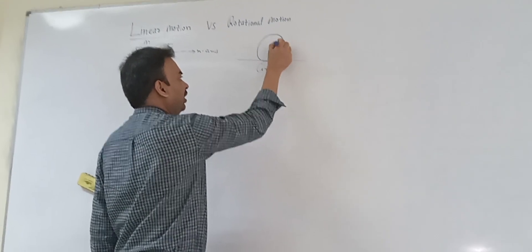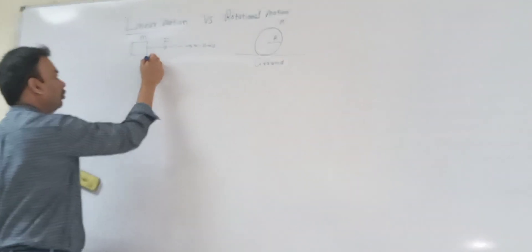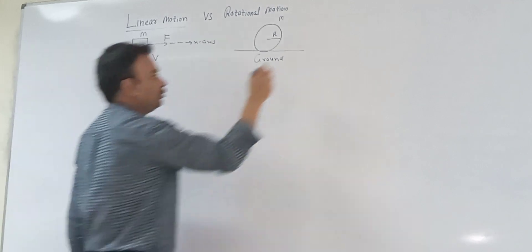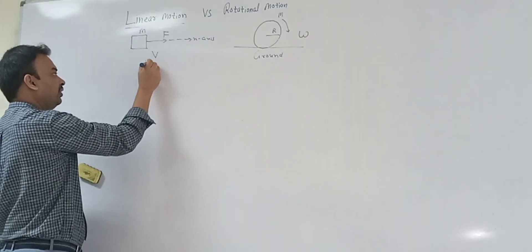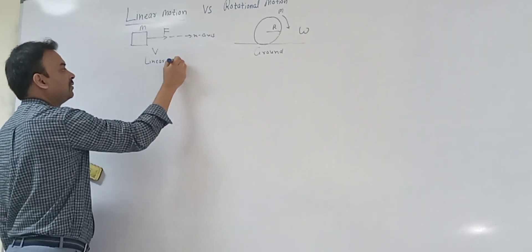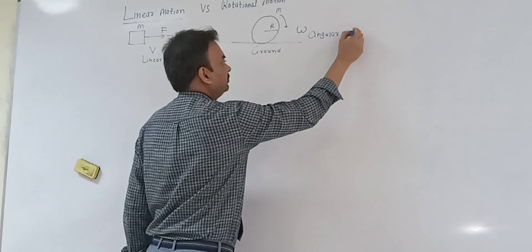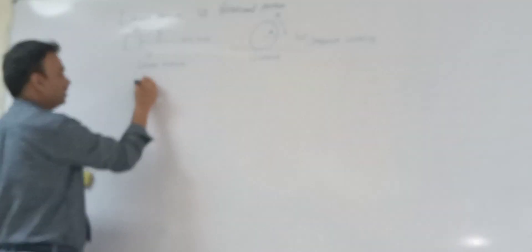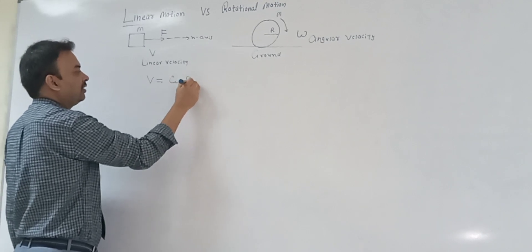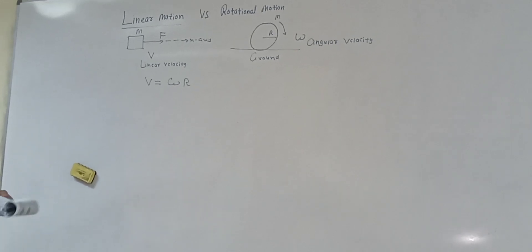The wheel has some radius r and mass m. In linear motion we talk about linear velocity v, and in rotational motion we talk about angular velocity omega. The relation between linear velocity and angular velocity is: v is equal to omega times r. This is the first relation.